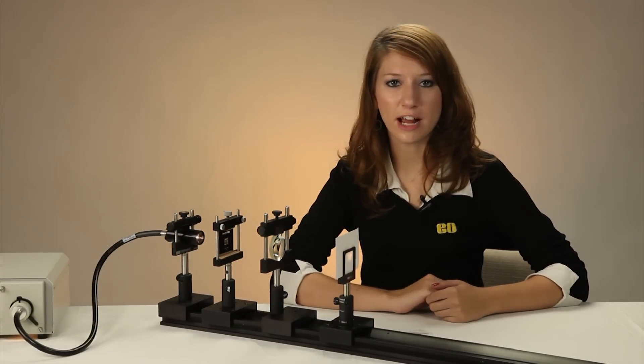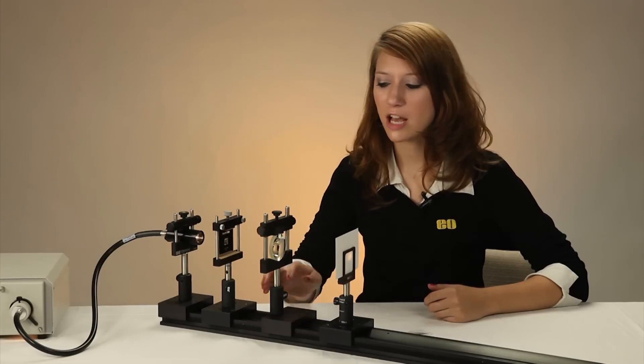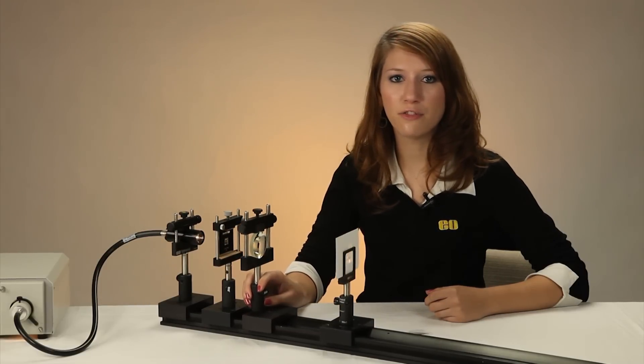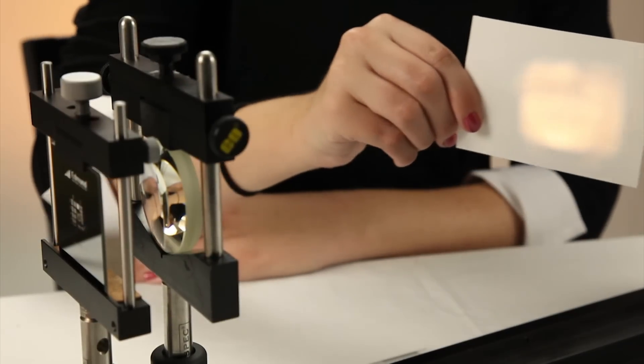As you can see in the first setup, if the object you are trying to image is closer to the lens than the focal length of the lens, in our case 50 millimeters, an image of the object will not form.